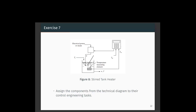Welcome to another lecture of control engineering. We will carry on with a few more examples of where control systems are used in our daily life. The example shown in this figure is a stirred tank heater. The target is to maintain the temperature of the liquid kept in the tank. The temperature sensor senses the temperature and sends it to the controller, which gives instructions to the electrical power or steam mechanism that provides energy to the tank system to raise the temperature.